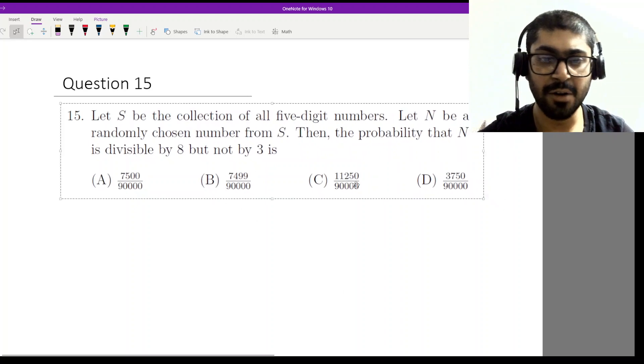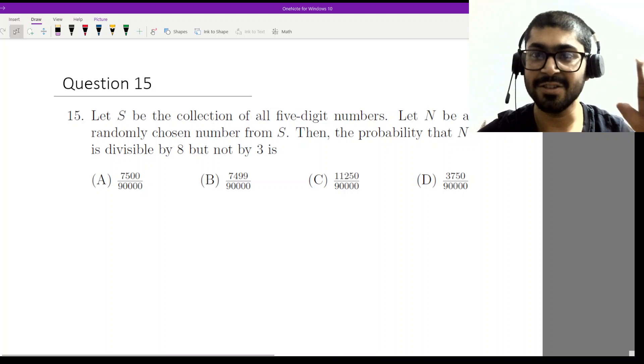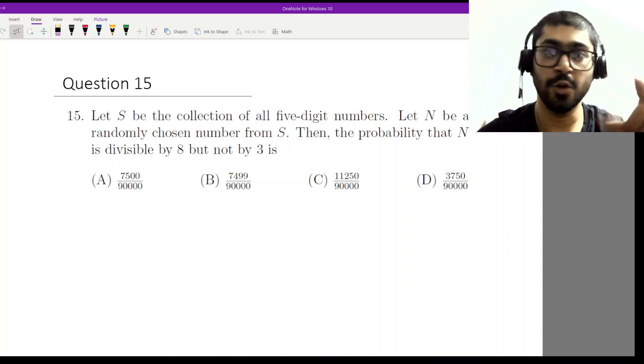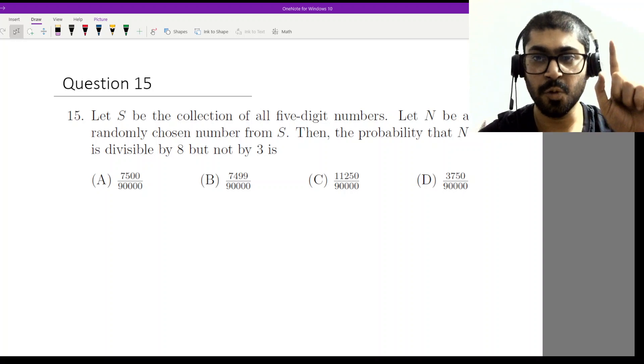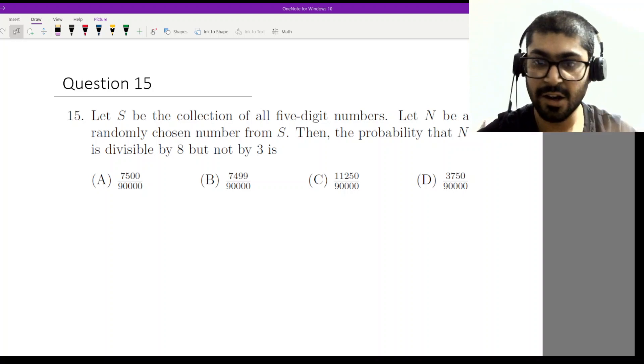We start from 10,000 and calculate up to 99,999. These are all of the five-digit numbers.